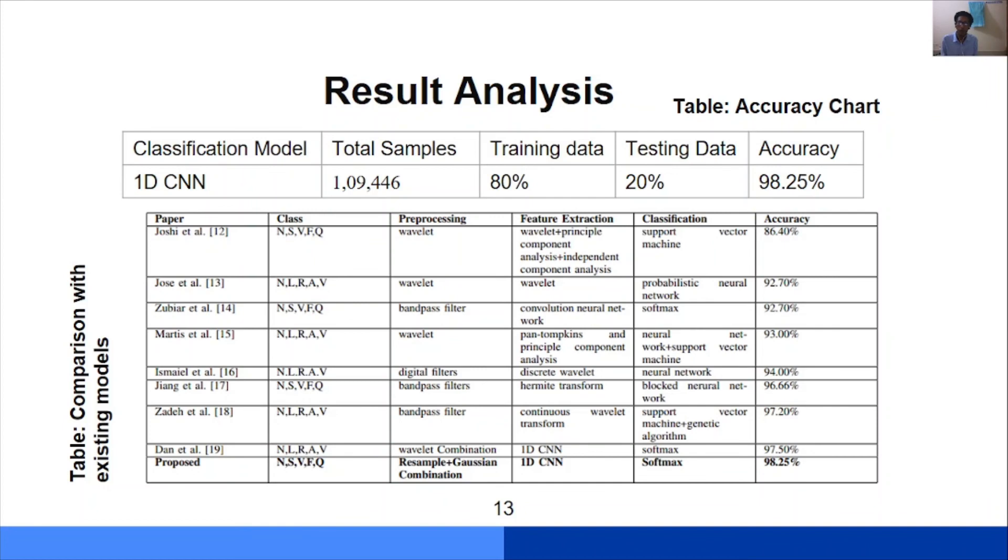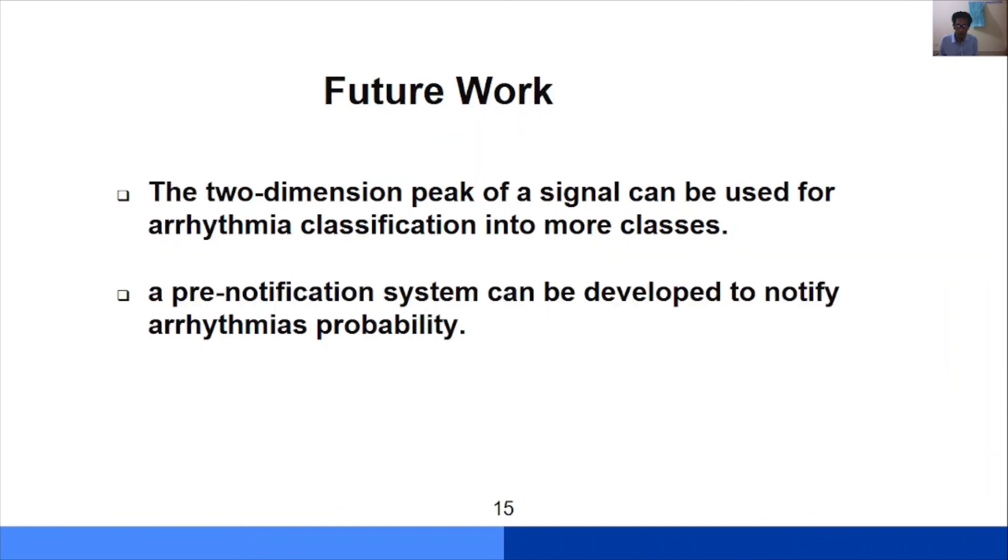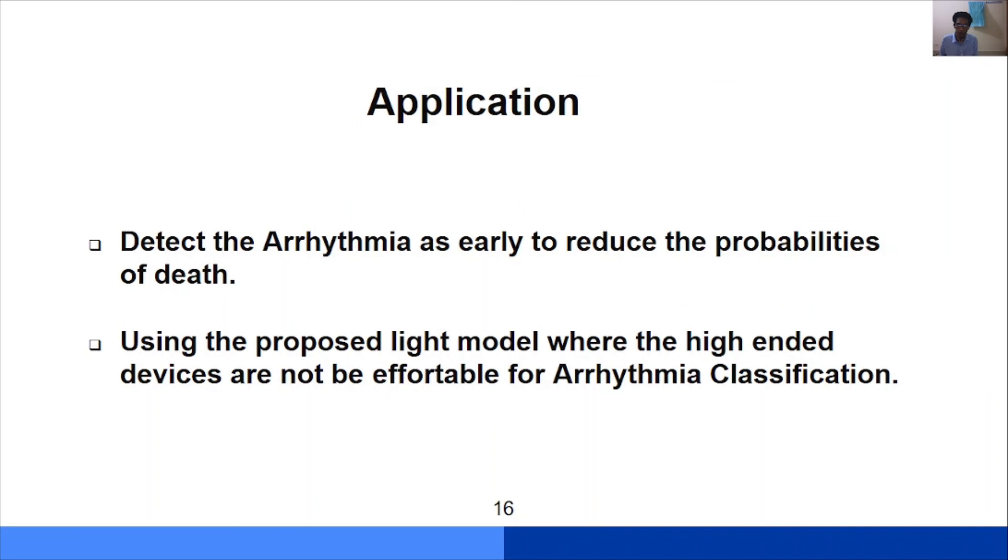Here are our contributions. A combination of resample and Gaussian mixture method is used. It contains simple methods and is relatively faster than existing models. We achieved straightforward performance which is computationally light with a 1D convolutional neural network. For future work, we use 1D ECG data. In future work we will try to implement two-dimensional data and more classes. Also a pre-notification system can be developed to notify arrhythmia probability. For applications, it can detect arrhythmia early to reduce the probability of death. Using the proposed lightweight model where high-end systems may not be affordable, arrhythmia classification can be used.